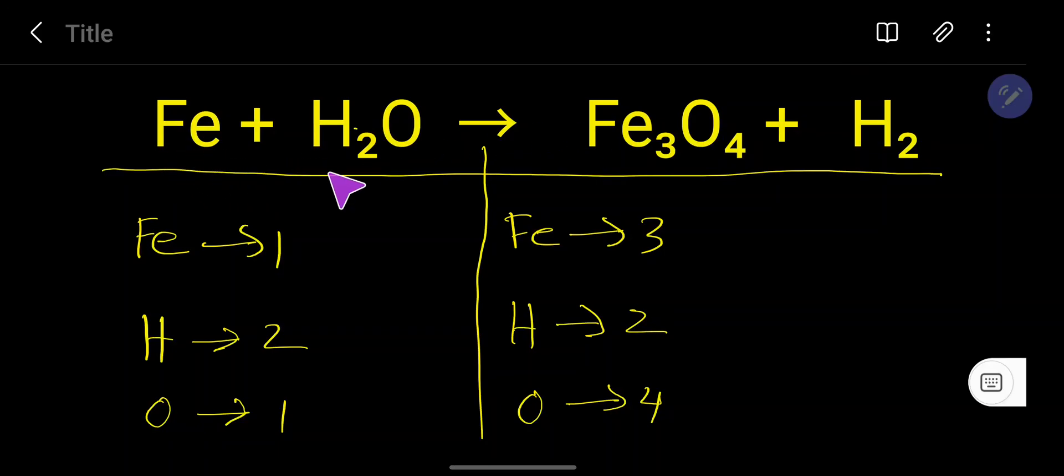How to balance Fe plus H2O that produces Fe3O4 plus H2. In the left-hand side we have one iron, but in the right-hand side we have three iron. So to balance iron, what can I do?